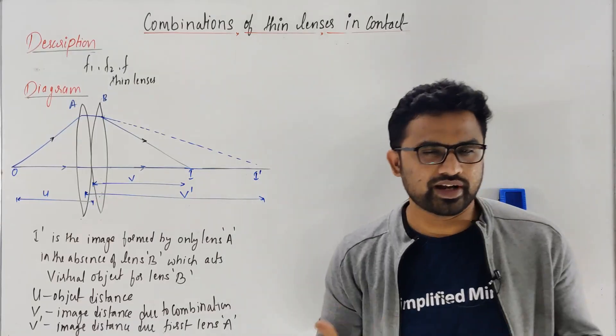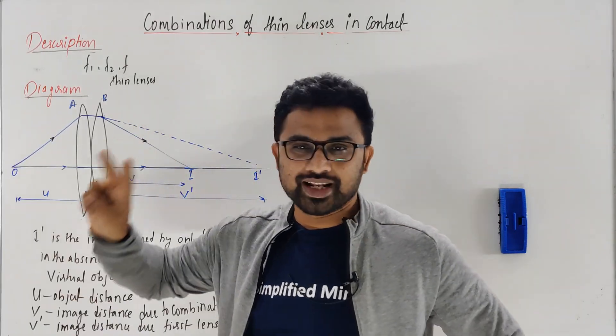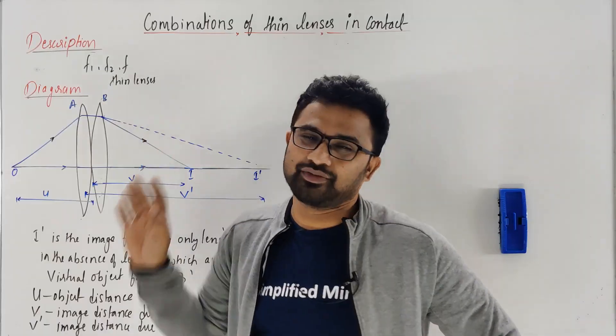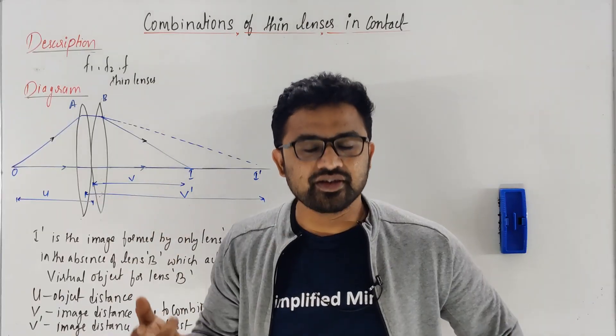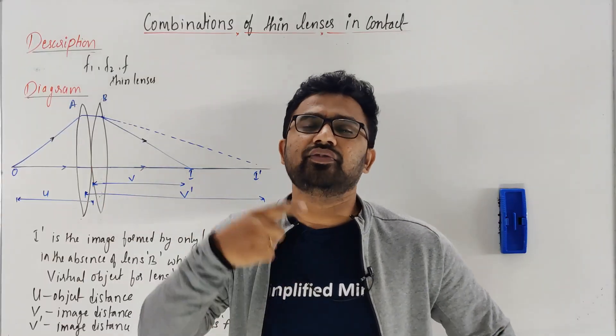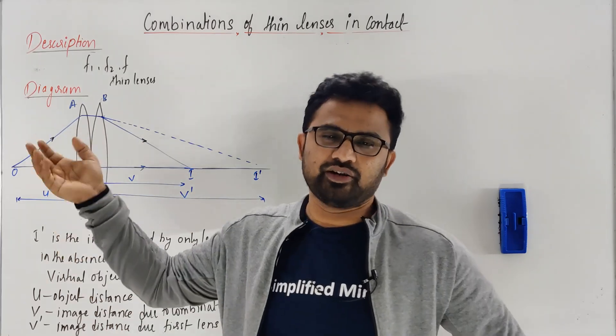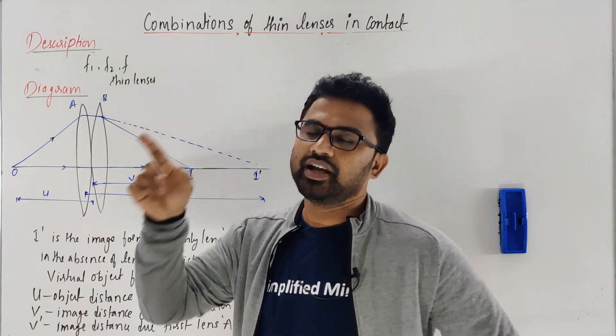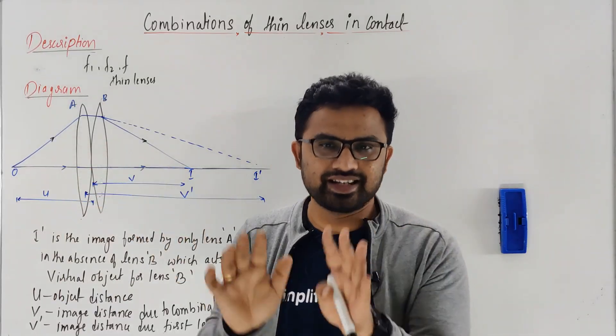Let's directly go to the derivation. First, in the description write what you're taking. Consider two lenses of focal lengths f1 and f2 respectively. These lenses are replaced with a single lens having focal length f. The effective focal length can be found using this derivation - f1 and f2 are individual focal lengths, f is the combined focal length of the single lens.